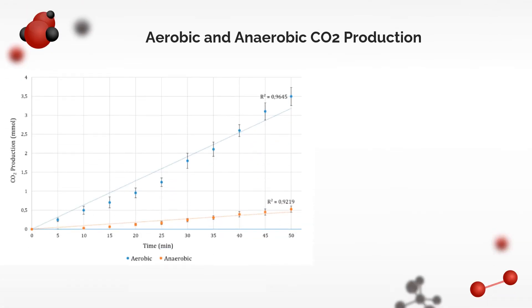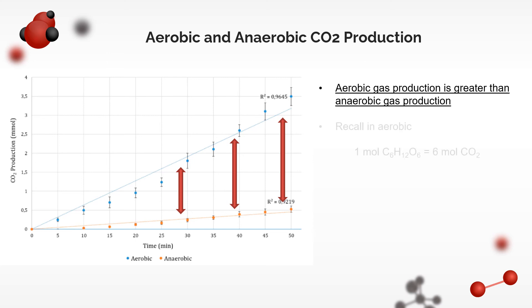Having processed the data from the aerobic and anaerobic setups accordingly, we can now compare the two. Aerobic CO2 production is shown in blue, while anaerobic in orange. Based on the graph, aerobic gas production is greater than anaerobic gas production. Note that the difference keeps getting bigger. In fact, we have confirmed the implication of the stoichiometries for aerobic and anaerobic respiration. Remember, in aerobic, one glucose gives 6 CO2. In anaerobic, one glucose gives 2 CO2.